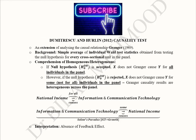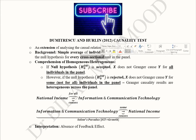This test is an extension of the usual Granger causality test. In the background, we have the simple average of individual Wald test statistics, which is actually obtained by testing the null hypothesis for each cross-sectional unit in the panel. So this is done at the individual or cross-sectional level, which is why it is a more detailed version of the usual Granger causality test.